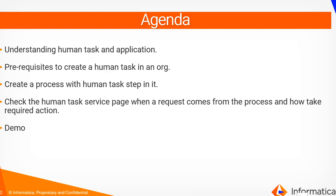In this video we will be understanding what is a human task and how it can be used in a CI process. We will look into the prerequisites to create a human task in an organization, create a process and use the human task step inside it. We will also look into the human task service page console when a request comes from a CI process and how the approver takes the required action. We will look into a demo for better understanding of this feature.